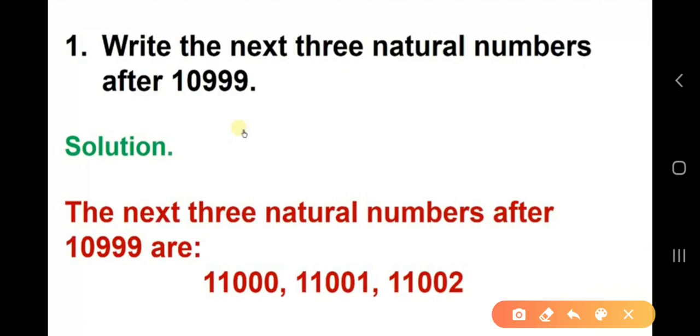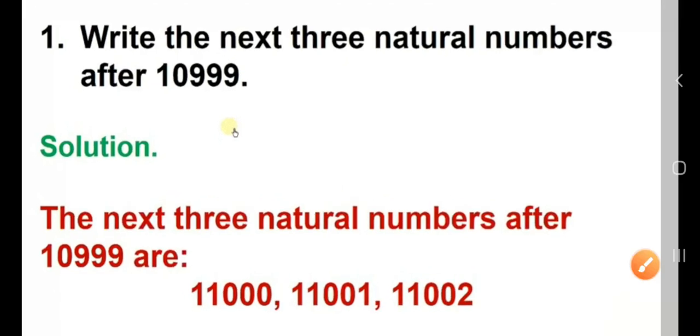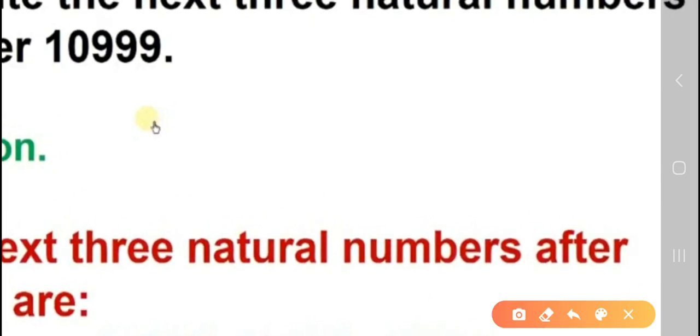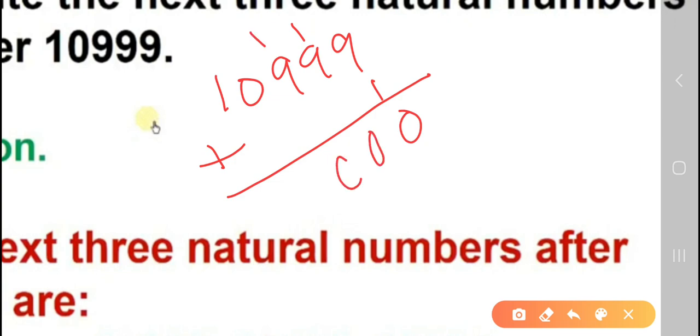So, let us see. Now, our number is 10999. 99 plus 1 you are doing. 9 plus 1, 10. One balance. Again 9 plus 1, 10. One balance. 9 plus 1, 10. Again one balance. Then it will be 11,000.